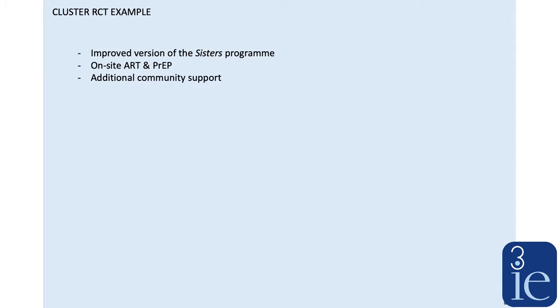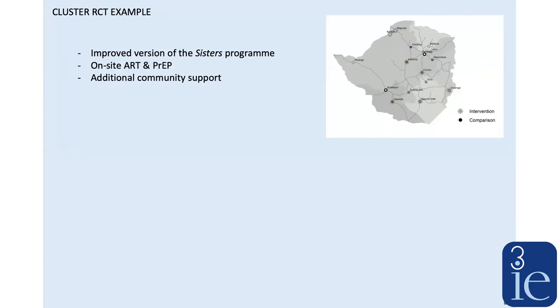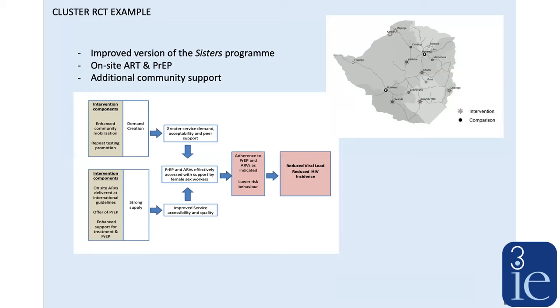The improved version was going to include on-site antiretroviral therapy, which was new, and also pre-exposure prophylaxis — medicine that women without HIV can use to prevent acquiring HIV. The improved version also included some additional community support to hopefully strengthen the implementation. There was a cluster randomised trial across the country in 14 sites, with half getting the intervention and half not, and the intervention has a theory of change.